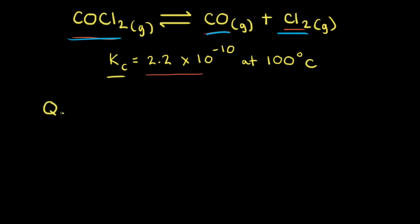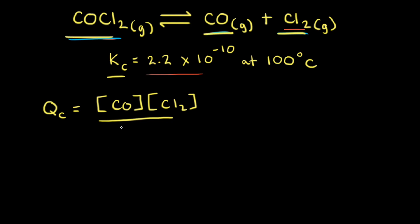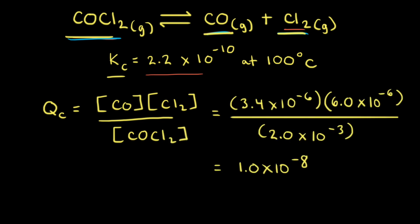First, we write the QC expression: the concentration of CO raised to the first power times the concentration of Cl₂ raised to the first power, divided by the concentration of COCl₂. At this moment in time, the concentration of CO is 3.4 × 10⁻⁶ M, the concentration of Cl₂ is 6.0 × 10⁻⁶ M, and the concentration of COCl₂ is 2.0 × 10⁻³ M. Plugging these into the expression, QC equals 1.0 × 10⁻⁸.